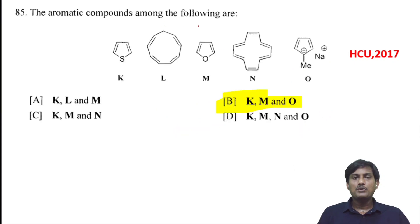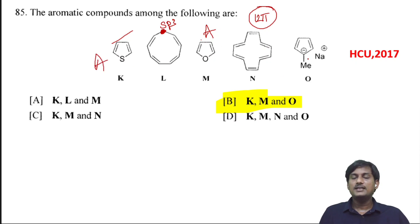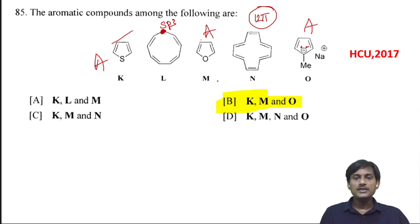The aromatic compounds among the following: thiophene is aromatic. A compound with sp3 hybridized carbon is non-planar and non-aromatic. Another is aromatic. One compound has 6 pi bonds meaning 12 pi electrons — it is not a 4n+2 pi system, so it is not aromatic. Thiophene is aromatic, and the cyclopentadienyl anion has delocalization of 6 electrons so it is also aromatic. The aromatic compounds are K, M, and O; the remaining are not aromatic.